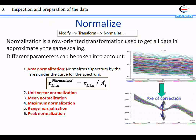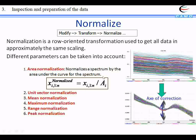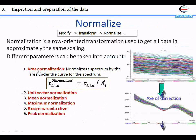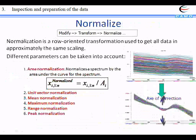The first and easiest pre-treatment is normalization. It is a transformation that takes every spectrum and divides it by a constant. The way to find this constant can vary — you can make a normalization on an area, a mean normalization, or a maximum normalization. There are many different options. It is a row-oriented transformation and it will correct for scale variation.